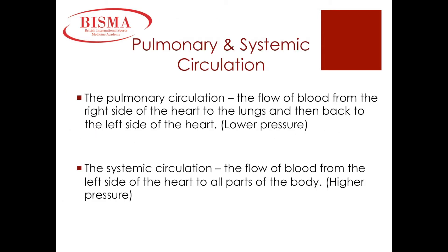Circulation within our bodies can be subdivided into the categories pulmonary and systemic. Pulmonary circulation is the flow of blood from the right side of the heart, namely the right ventricle, to the lungs to be oxygenated. This oxygenated blood then flows back to the left side of the heart, so the left atrium. This circulation is under lower pressure because our heart and our lungs are very close together, so it doesn't have far to go.